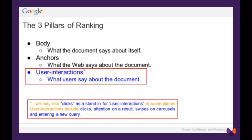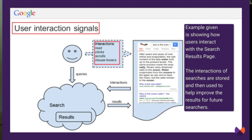This is what users say about a document. Google says they may use clicks as a stand-in for user interactions. User interactions include clicks, attention on a result, swipes on carousels, and entering a new query. They show us how the actions of searchers within the Google search results — reads, clicks, scrolls, mouse hovers, and even more — are used.